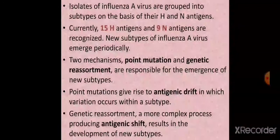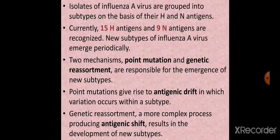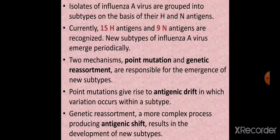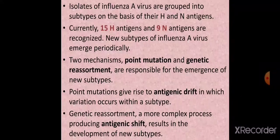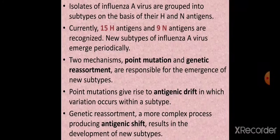Point mutations give rise to a phenomenon called antigenic drift, in which variation occurs within a subtype — drift occurs within a subtype. Genetic reassortment is a more complex process that may lead to antigenic shift, which results in the development of new subtypes. Antigenic shift is a bigger process than antigenic drift and is responsible for flu pandemics because different segments mix and match to form new subtypes.